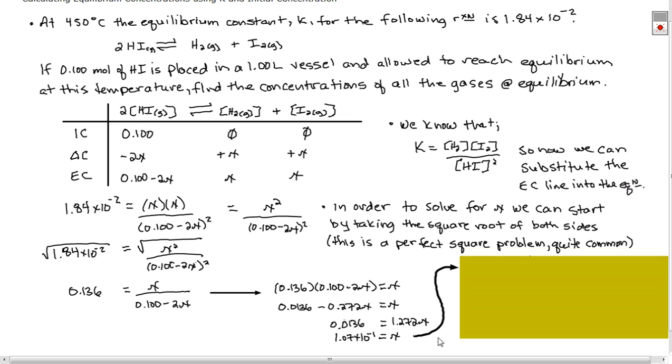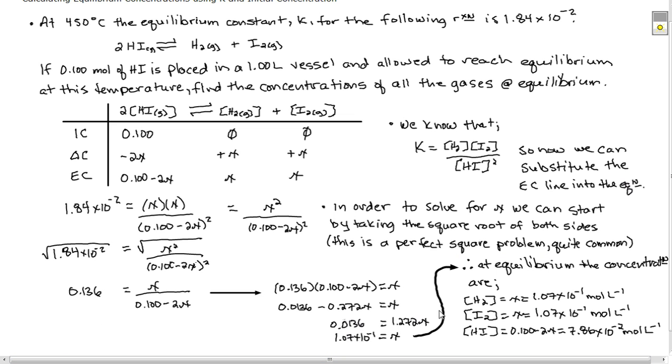Now I'm not done yet. I need to go out and actually figure out what my final concentrations are. So I go ahead and I do that. I get my hydrogen gas, which its final concentration would be x. Same thing for iodine. For my reactant, it would be my initial concentration minus my change, which gives me that final concentration. So this is an example of a pretty straightforward question where we have a perfect square.